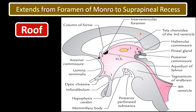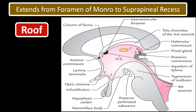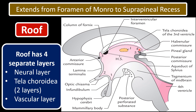The roof extends from the interventricular foramen of Monroe to the suprapineal recess. The roof has four separate layers: a neural layer, then the tela choroidea arranged in two layers, and then the vascular layer underneath the tela choroidea. Here you are seeing the tela choroidea indicated by the dotted red color line.